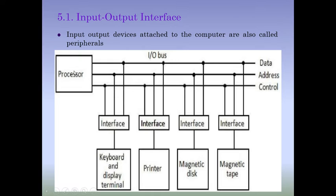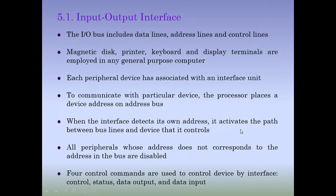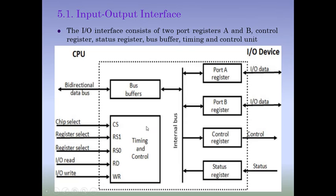Suppose this processor wants to communicate with the keyboard — it will send a chip select signal to this interface. Every interface has a common structure like this. For the interface connected with the keyboard, the chip select pin will get value 1, meaning this interface will get enabled.